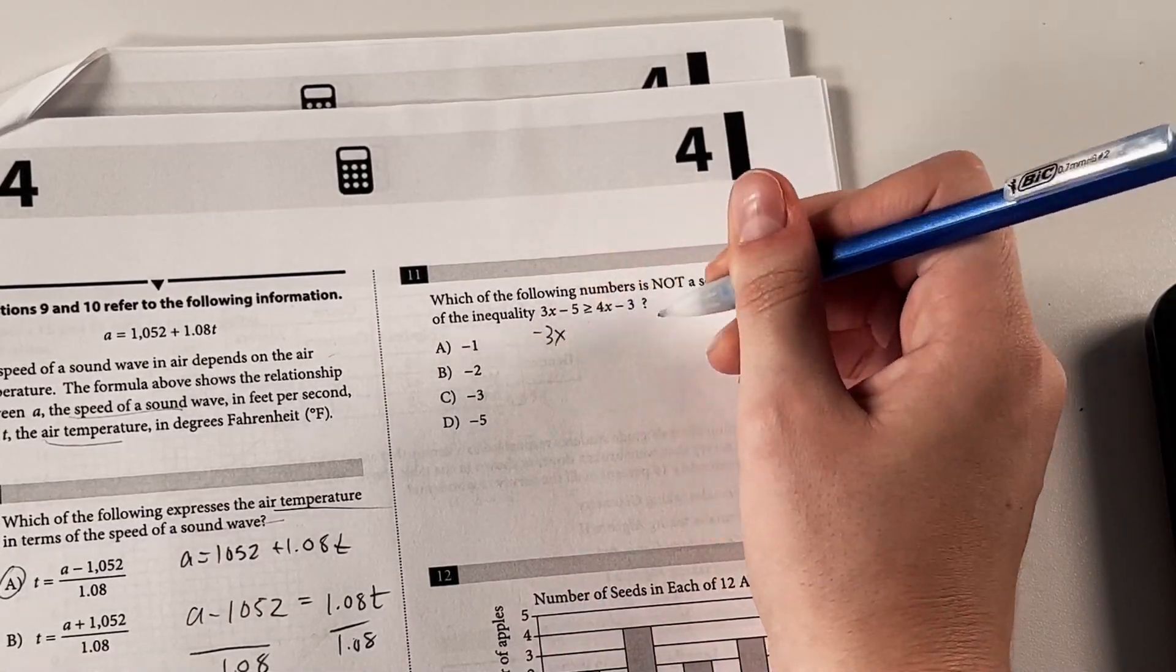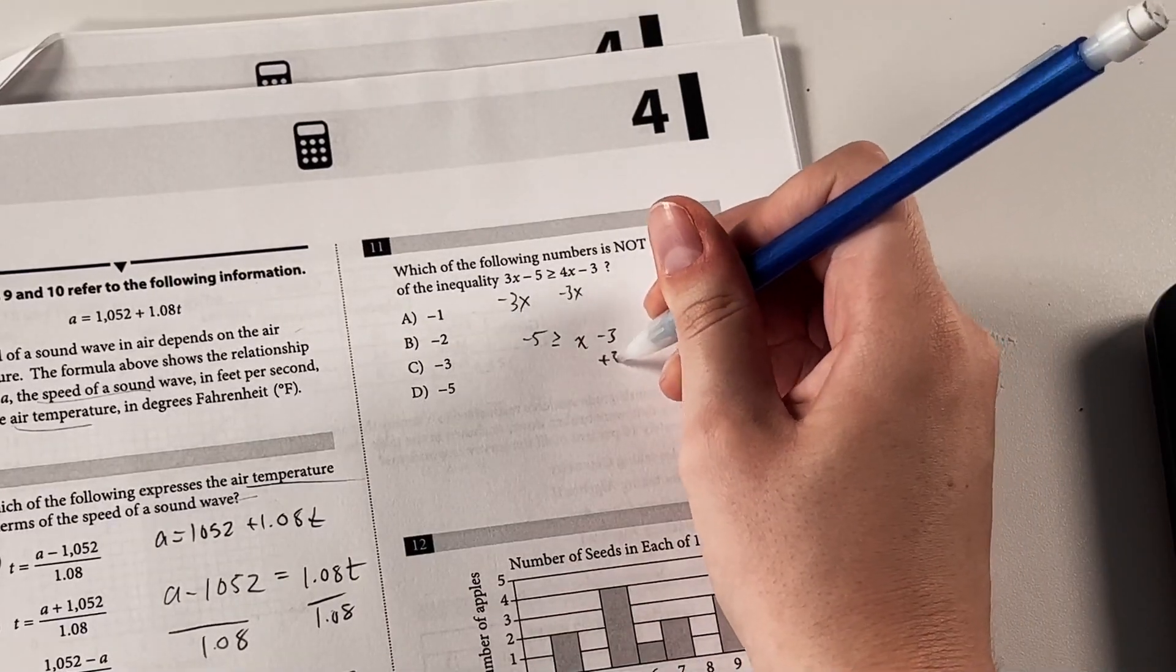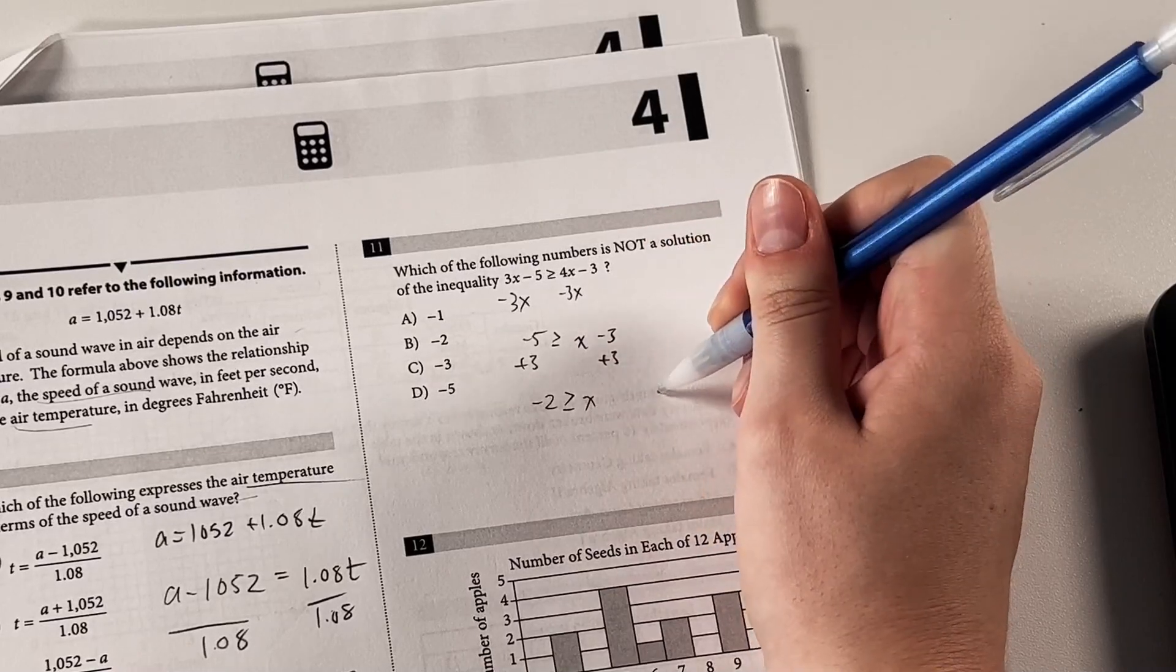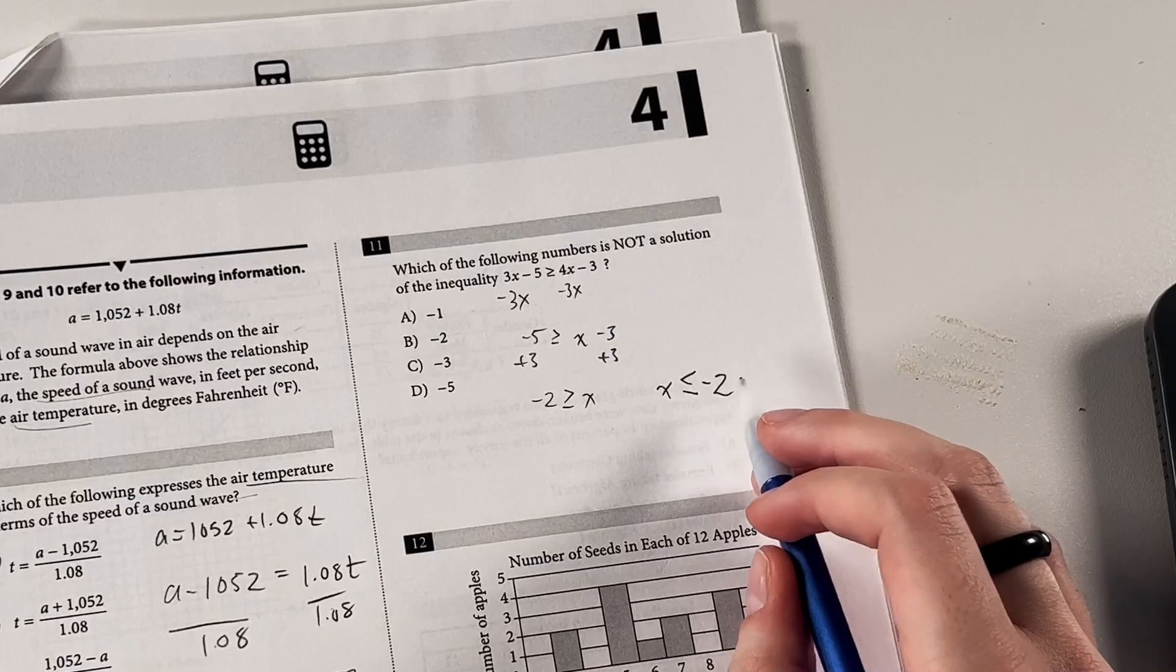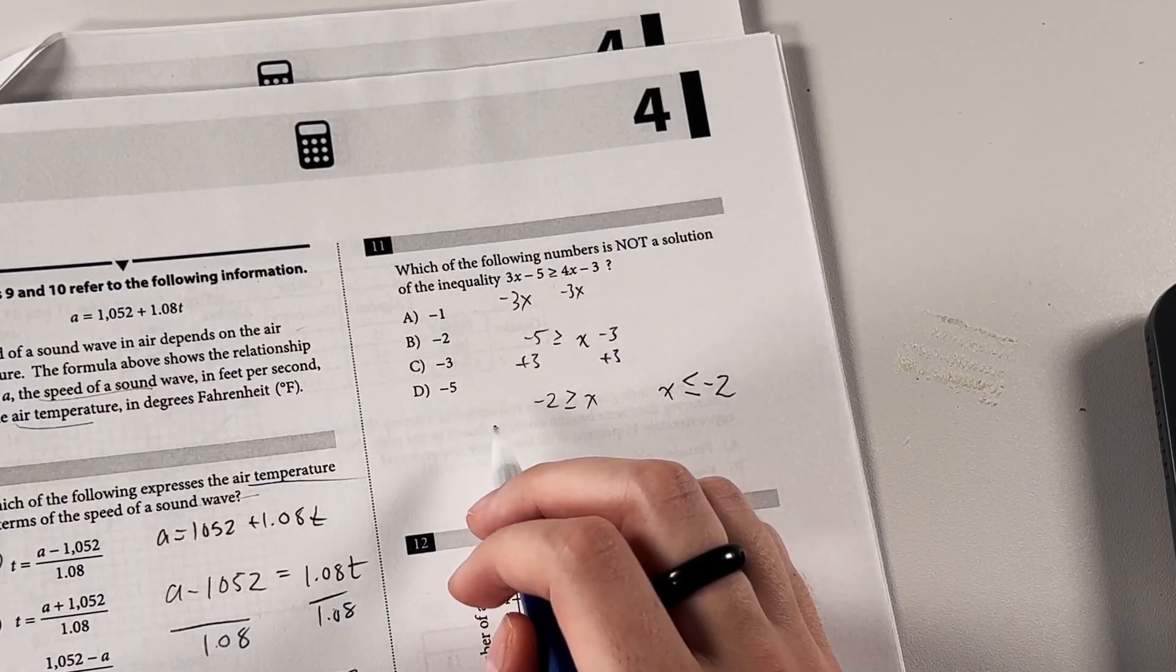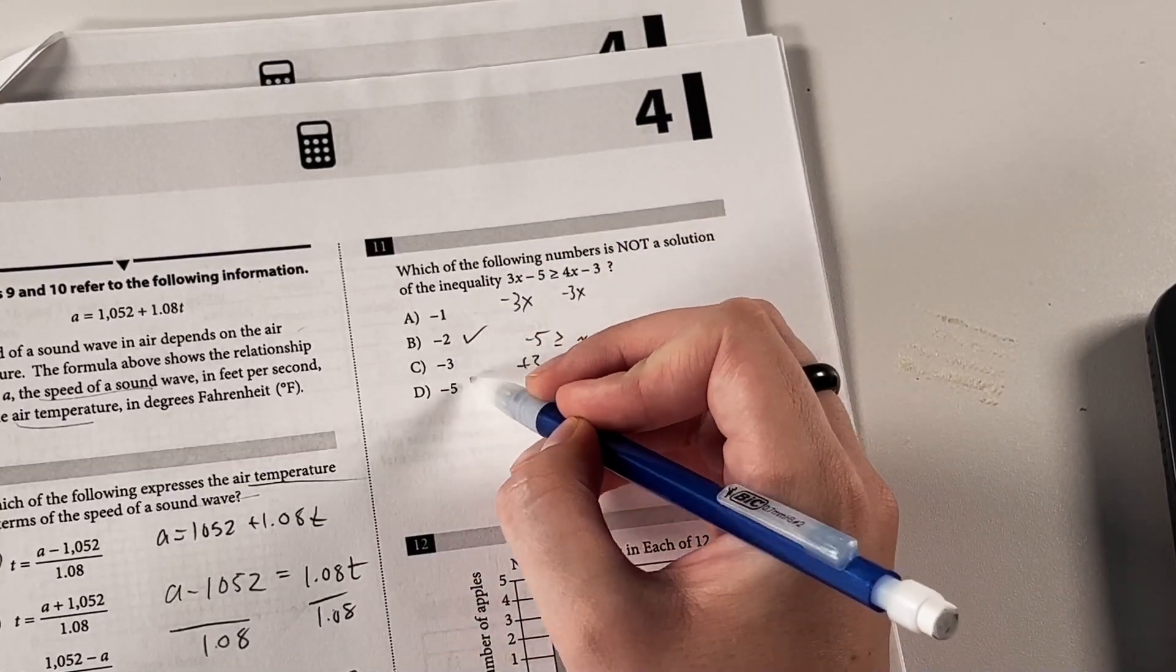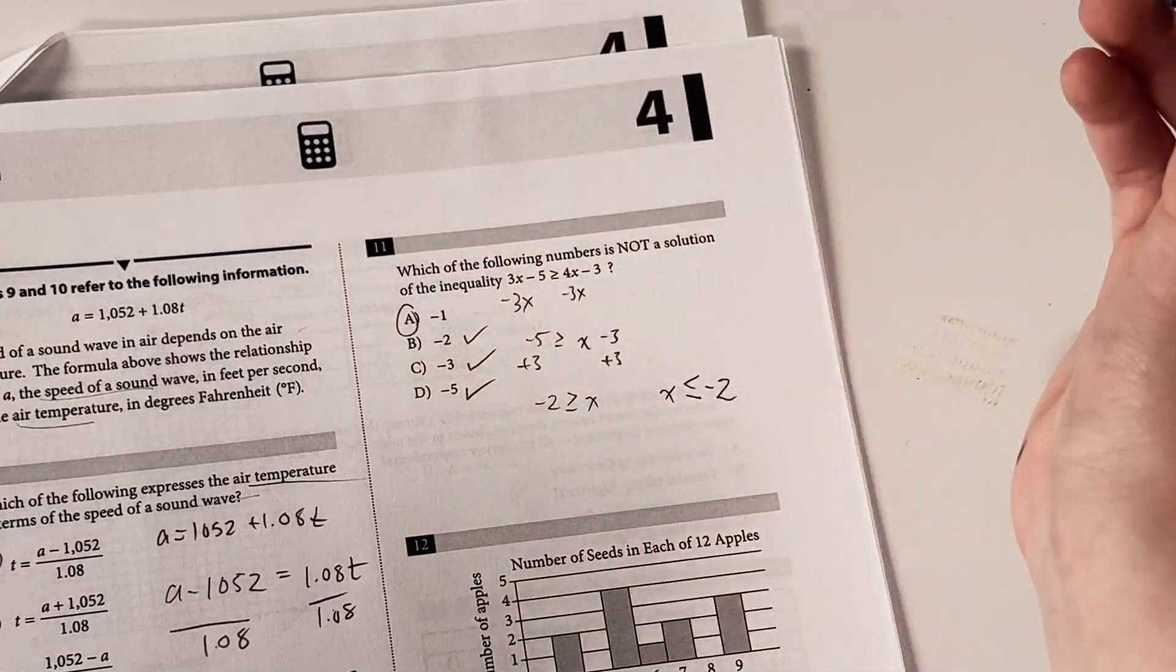So we can subtract both sides by negative 3x, so we get just an x on that side, and then we can also add 3 to both sides, and then we get negative 2 is greater than or equal to x, or in other words, x is less than or equal to negative 2. So we just solved it pretty simply, and that shows us easier which one of these is wrong. So if we know x has to be less than or equal to negative 2, it can be equal to negative 2, and anything less than that is okay, so negative 1 is going to be the one that doesn't fit.